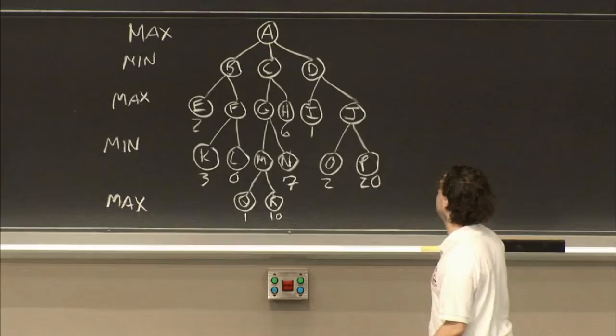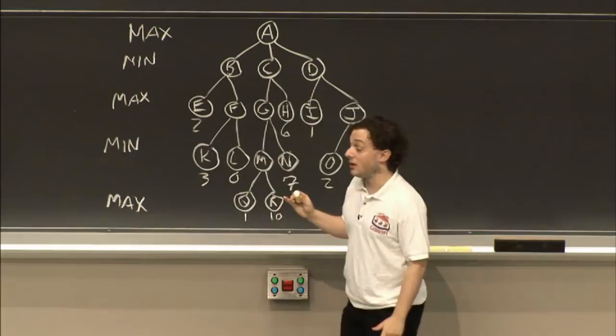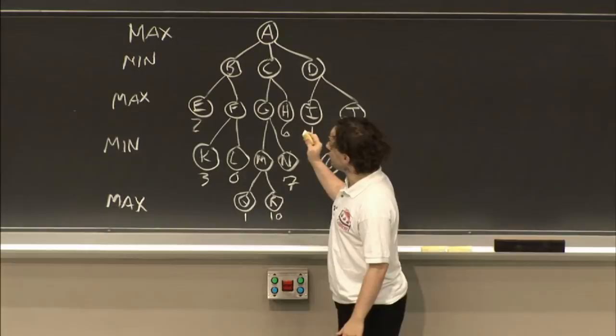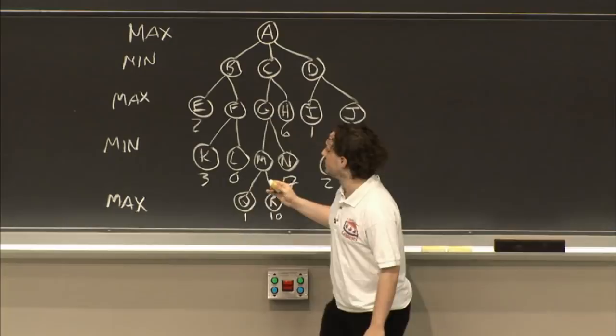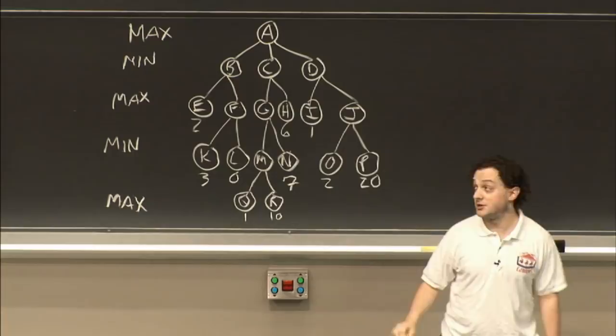As you remember, the game search when you're using regular Minimax is essentially a depth-first search. At each level, it chooses among all the children whichever value the parent wants. So here at F, it would choose the maximum of K and L. But since it's a depth-first search, we start at the top. We're doing A — we need the maximum of B, C, D. Depth-first search: we go to B.